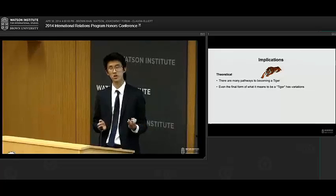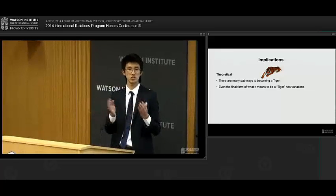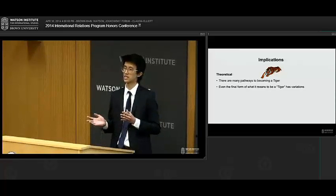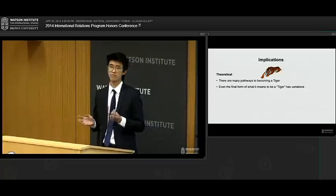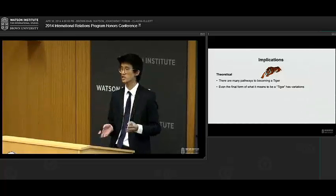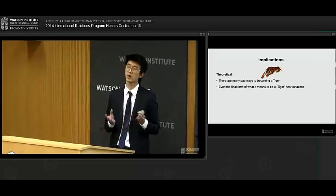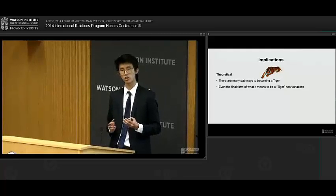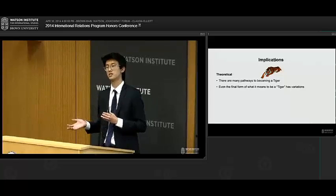So in Korea, what you saw was a state that really prized and treated private indigenous enterprise very well. In Taiwan, what you see actually is a reliance on state-owned enterprises. So because the private sector was so weak in Taiwan, there were no Hyundai's or Samsung's to champion, the state had to come in and create their own enterprises. And for Singapore, which also lacked a strong domestic business class, Singapore turned to foreign direct investment.